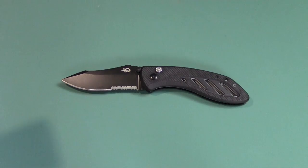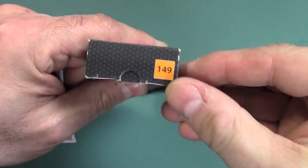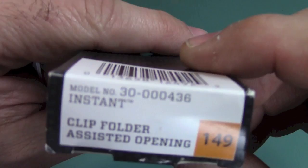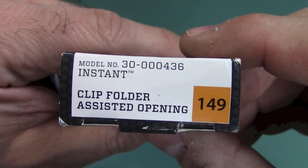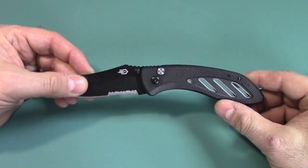Like I said, I got this at Walmart. Here is the box that it came in. There's the Walmart number, which is $149. And there is the model number, 30-000436. Again, it is the Gerber Instant. It's Assisted Opening and that's one of the standout features of this knife, along with the plunger to release the lock. Let's go ahead and look at those special features, or at least the features that make this knife special.